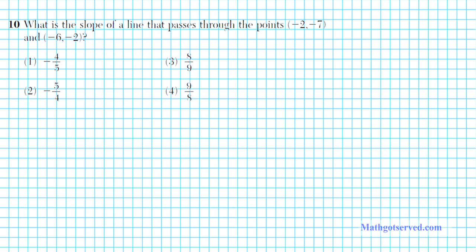Alright let's move on to the last problem question number 10. It says what is the slope of a line that passes through points negative two negative seven and negative six negative two. Now let's assume that you forgot your formula for the slope of a line giving two points. You can always consult your reference sheet. The formula for the slope of a line giving two points is provided in the coordinate geometry section.